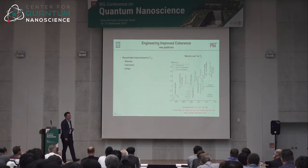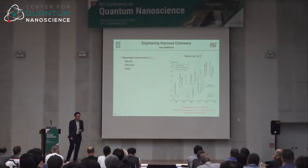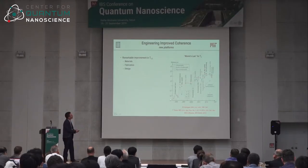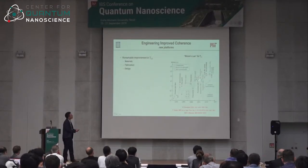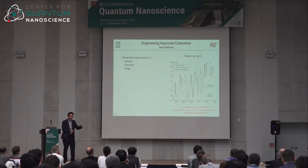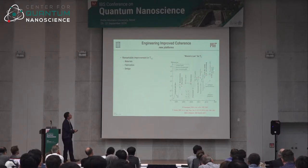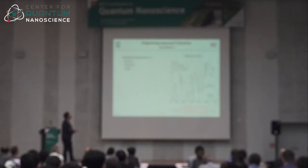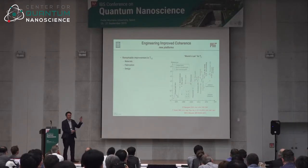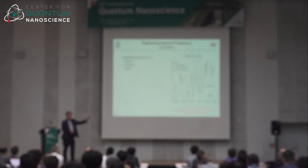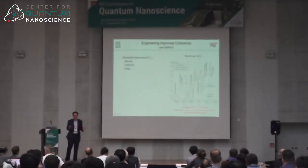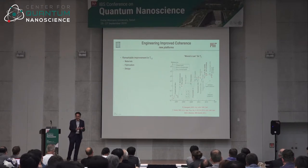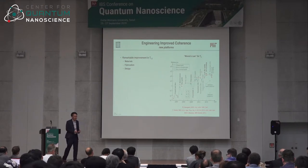The answer lies in the coherence. Over the past two decades, the coherence time of superconducting qubits has increased by more than five orders of magnitude. There are many different types of qubits, and the trend is consistently increasing — we don't yet see a physical limitation preventing it from continuing. These improvements have come from a combination of worldwide efforts in materials, fabrication, and design.